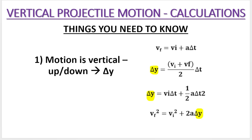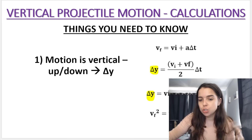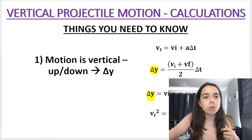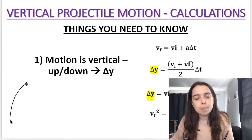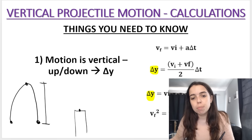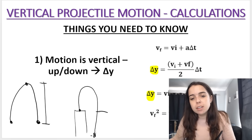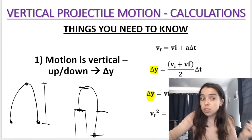Delta y basically means the distance that the object moves. For example, if we're working with an object that goes straight up and straight down, you could work out the height. Or if an object is thrown off of a building, you could work out the displacement as delta y — it depends on the question.